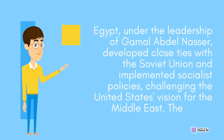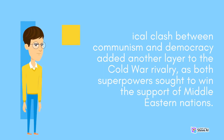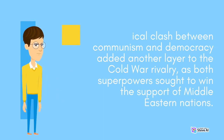Egypt, under the leadership of Gamal Abdel Nasser, developed close ties with the Soviet Union and implemented socialist policies, challenging the United States' vision for the Middle East. The ideological clash between communism and democracy added another layer to the Cold War rivalry, as both superpowers sought to win the support of Middle Eastern nations.